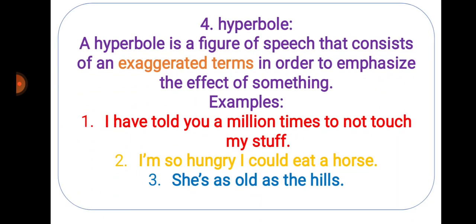Next is hyperbole. A hyperbole refers to exaggerated terms. For example, I have told you million times not to touch my stuff. I am so hungry I could eat a horse. She is as old as the hills. So this is nothing but exaggerating.